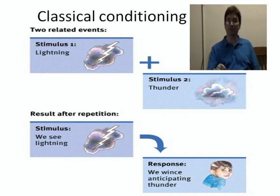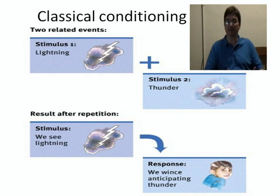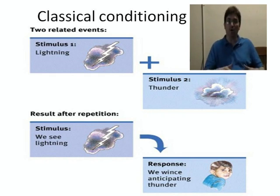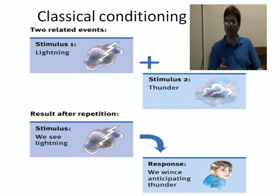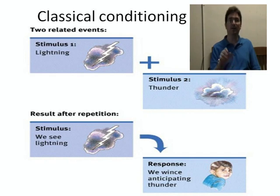A loud thunderclap is something that children are innately afraid of. So the child sees the lightning, then the thunder happens, and the child is afraid. Over time, the lightning will happen and the child will have the fear response automatically, anticipating the thunder. Until eventually the thunder itself is forgotten, and the child will have the fear response directly to lightning.